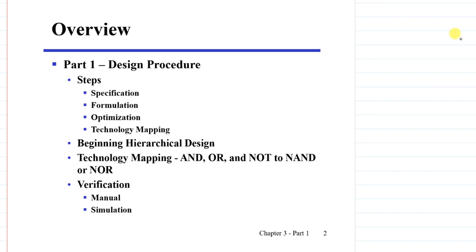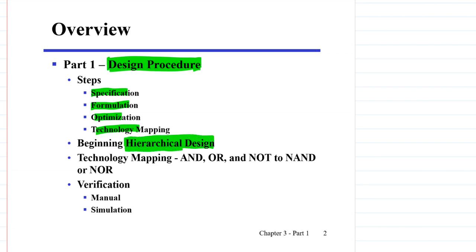As mentioned, in the first part we deal with the design procedure, which includes several steps like specification, formulation, optimization, technology mapping, and verification. Then we see how we can deal with the hierarchical design approach to make the design procedure more efficient. We will also talk more on the technology mapping — how we can map from AND, OR, and NOT implementation into the NAND or NOR implementation, using just NAND or just NOR gates.